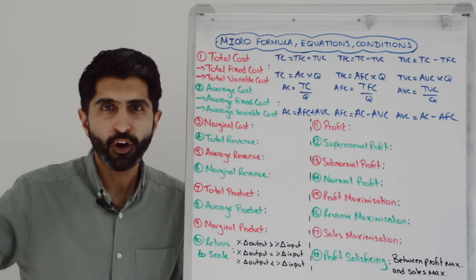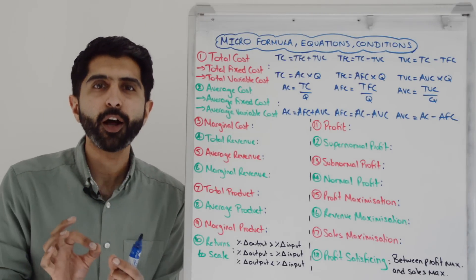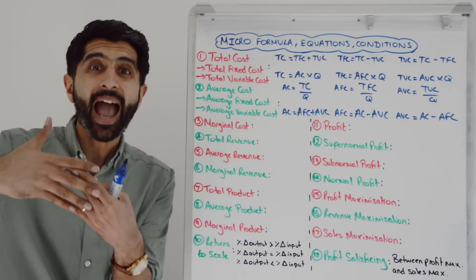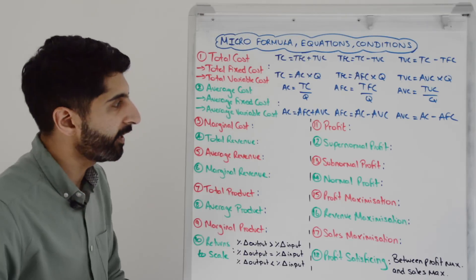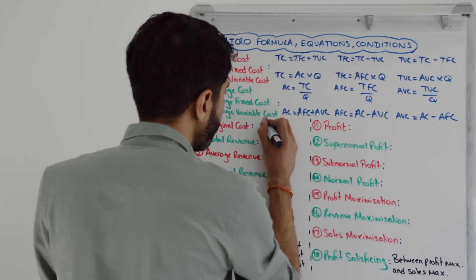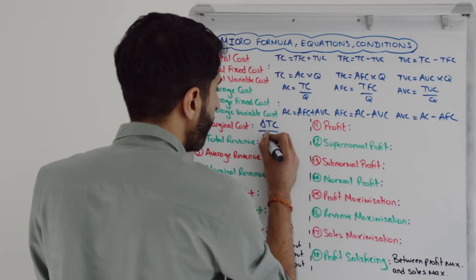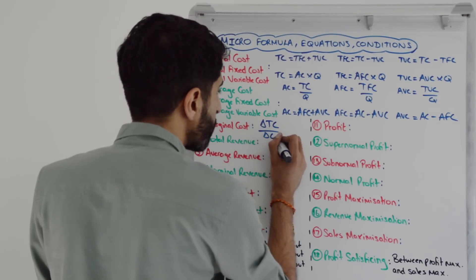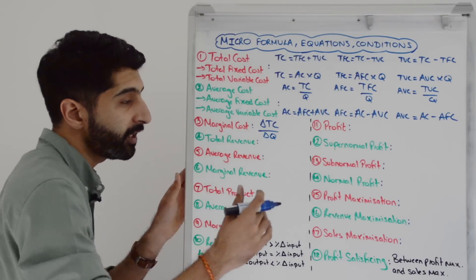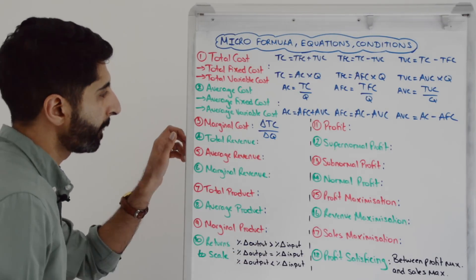And now to marginal cost. A nifty trick with any marginal equation: it's just the average equation with changes in it. So marginal cost is simply the change in total cost divided by the change in quantity. Your average equation with changes in it will always give you marginal.